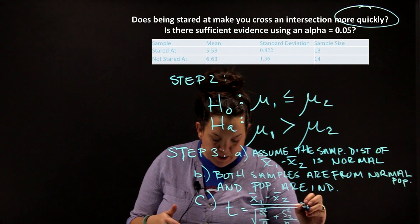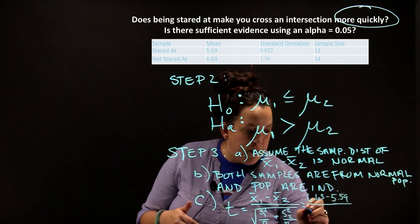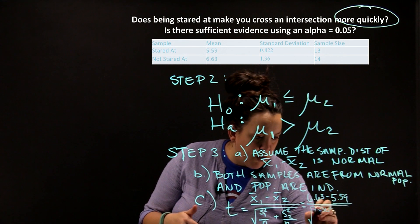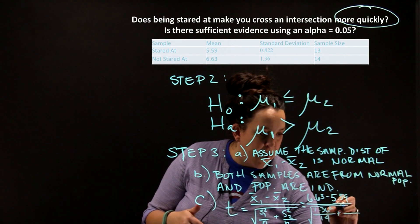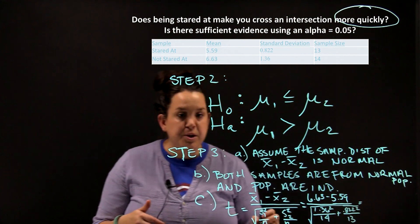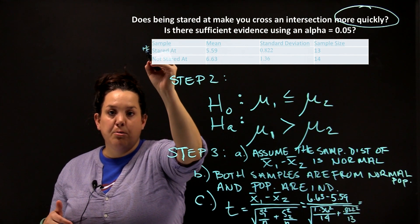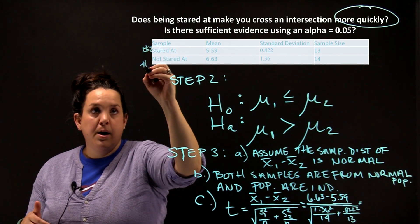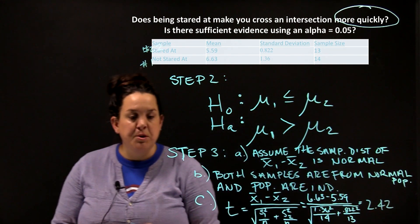Plugging in the values from the table: x-bar sub one is 6.63 from the first group, and x-bar sub two is 5.59. S sub one is 1.36 squared over n sub one, which is 14. We add to that s sub two, which is 8.22 squared divided by 13. The stared-at group was group two and the not-stared-at group was group one. Doing that calculation gives a test statistic of approximately 2.42.